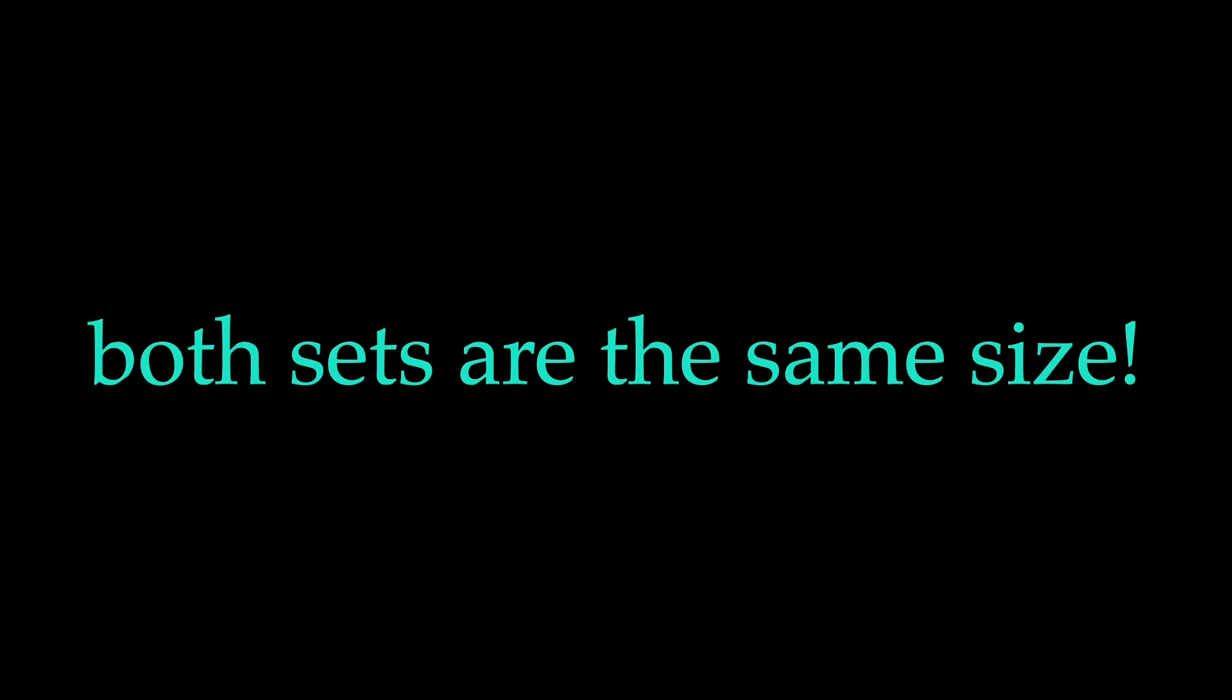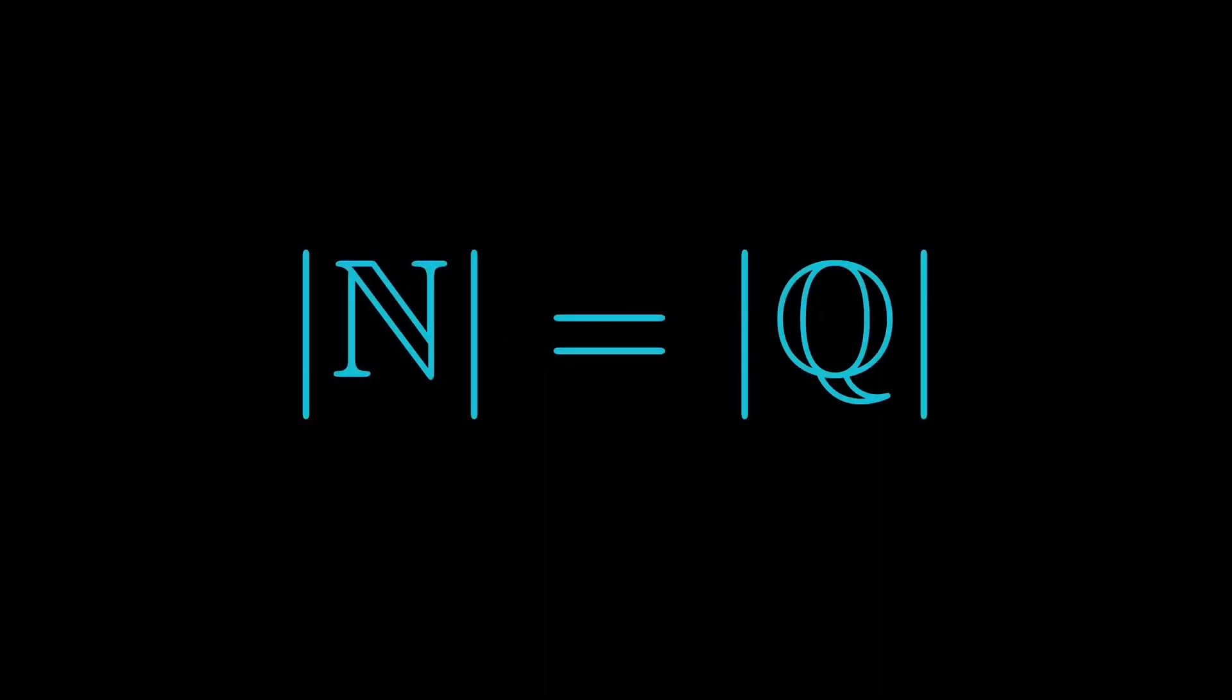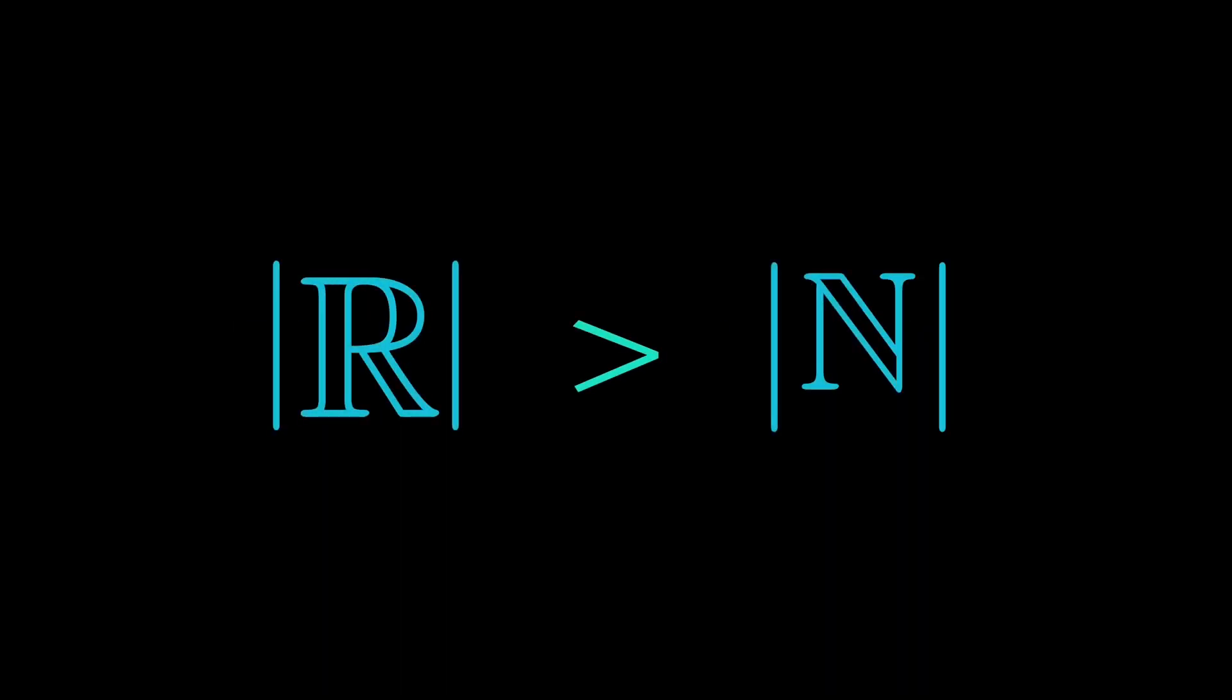Similarly, we can prove that the set of integers is the same size as the set of natural numbers. And even more amazing, the set of rational numbers is also the same size as the set of natural numbers. But what about the real numbers? Here is where things get really crazy. Georg Cantor showed that there have to be more real numbers than natural numbers. He even went a step further. He showed that there are more real numbers between 0 and 1 than in the whole set of natural numbers. How is that even possible?